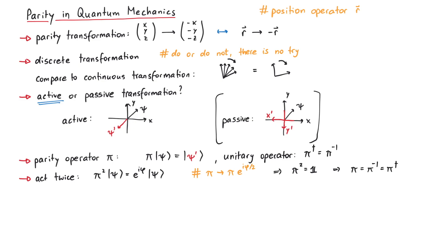So in conclusion, this makes pi not only unitary, but also Hermitian. Now, how does pi act on the position operator?